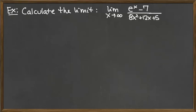For this problem, we're looking to calculate the limit as x goes to infinity of the ratio e to the x minus 7 on top and 8x squared plus 12x plus 5 on the bottom.